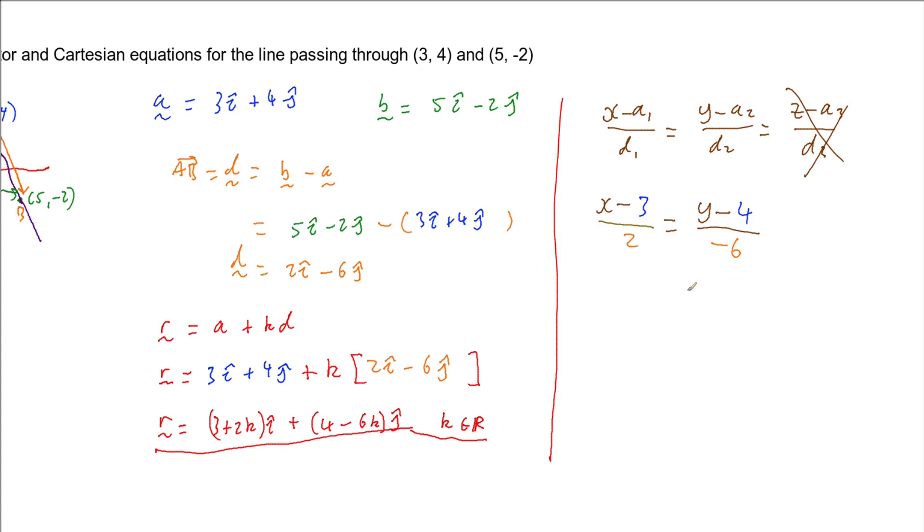So that means we can actually tidy this up. So to tidy this up, first of all, I'm going to multiply both sides by negative 6, and I'll multiply both sides by 2 while I'm at it. So that's going to give us -6(x - 3) = 2(y - 4).